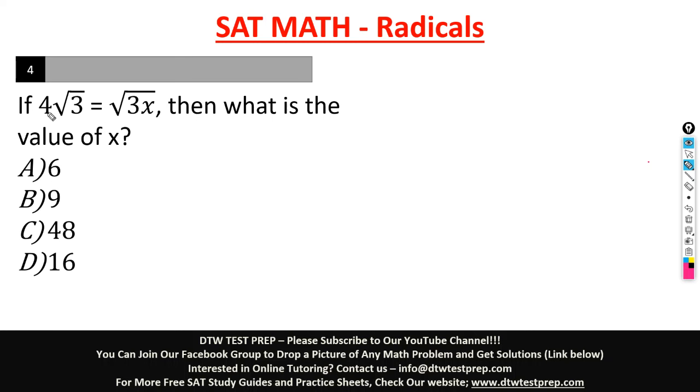It says if 4 square root 3 is equal to the square root of 3x, then what is the value of x? The easiest and fastest way to do this is just square both sides. So we have 4 square root 3 equal to the square root of 3x, so I will square here, I will square here.